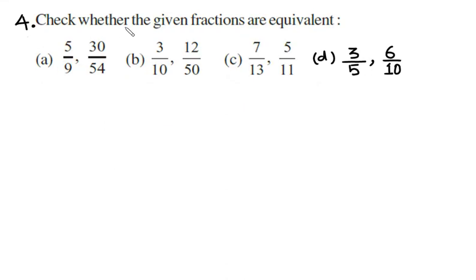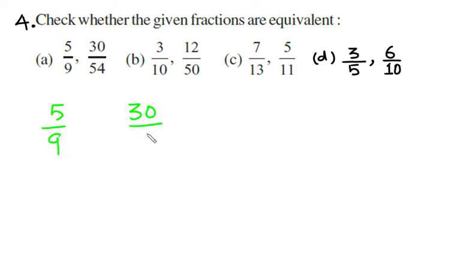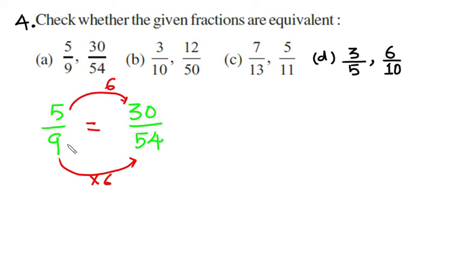Example 4: check whether the given fractions are equivalent. In parts A, B, C, D we have two fractions to compare. For part A, the first fraction is five ninths and the second fraction is thirty fifty-fourths. To go from 9 to 54 in the denominator, we multiply by six. If we also multiply the numerator 5 by six, we get thirty. So multiplying by the same non-zero number six gives us thirty fifty-fourths — these are equivalent fractions.